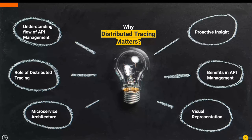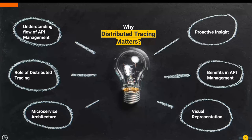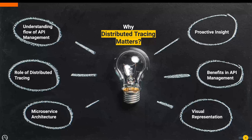Understanding the intricate flow of requests and responses is crucial in API management. Distributed tracing is a method to track user requests in their entirety as they travel across the components of the distributed system, like microservice-based applications. Distributed tracing serves as the key to proactive issue identification and resolution. Imagine having a visual representation of your API ecosystem, highlighting the nuanced dance of data — that's what distributed tracing offers: a proactive insight into your system health.